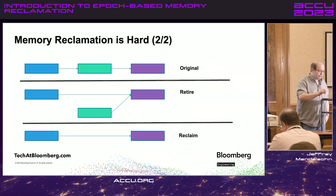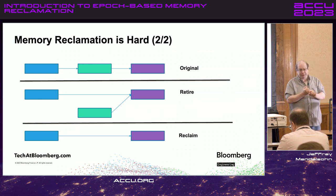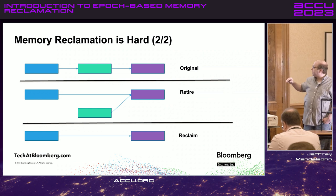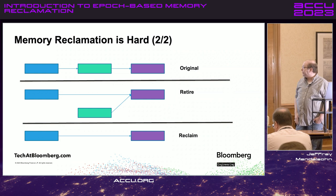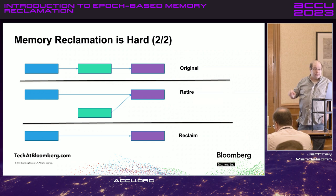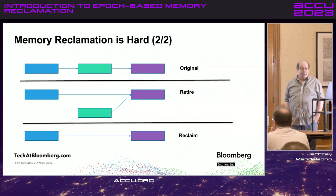This will be easier with a picture. In this example, I have a simple linked list and I want to delete the green node. The retire step modifies the data structure so no new threads can find the green node, while any thread currently in the green node can finish its processing normally — it doesn't know the memory is about to be reclaimed. So I set the blue node's next pointer to the purple node. No new threads can find the green node. The green node still has its next pointer to the purple node, so any thread currently working there can proceed to the purple node normally. When they've all exited, I can reclaim the memory associated with the green node.